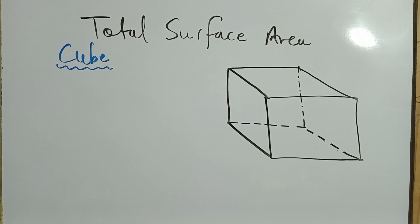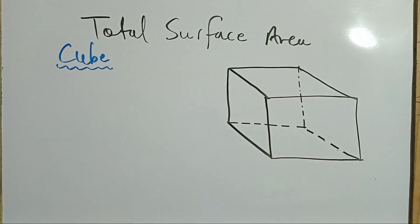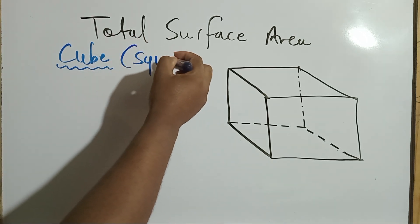Now what the total surface area is, is the area of all the six faces. So you know that a cube is three-dimensional and it has six faces. The good thing about the cube is that it's made up of squares, so that makes it a little bit easier to find the total surface area.